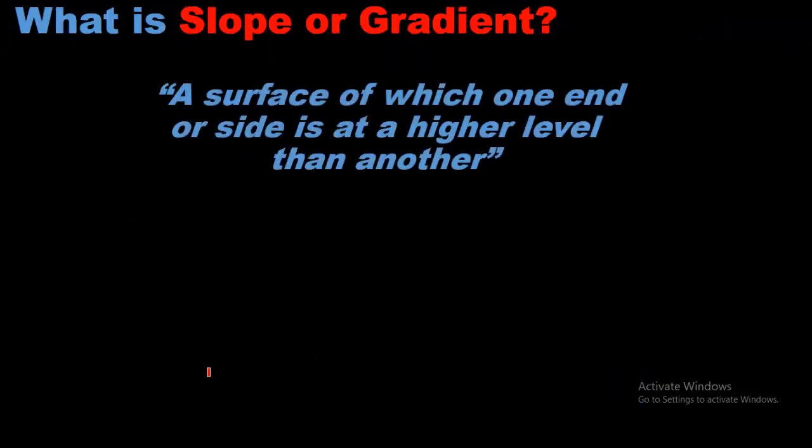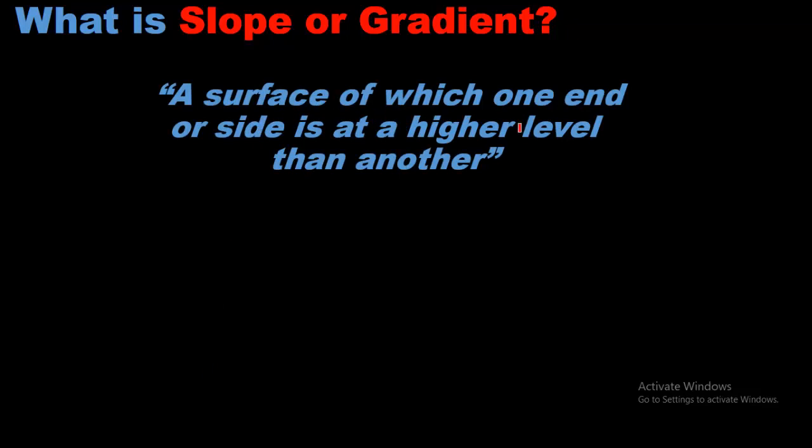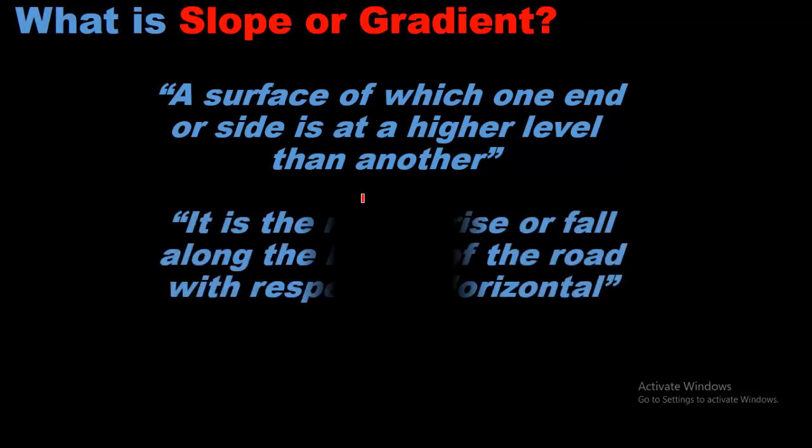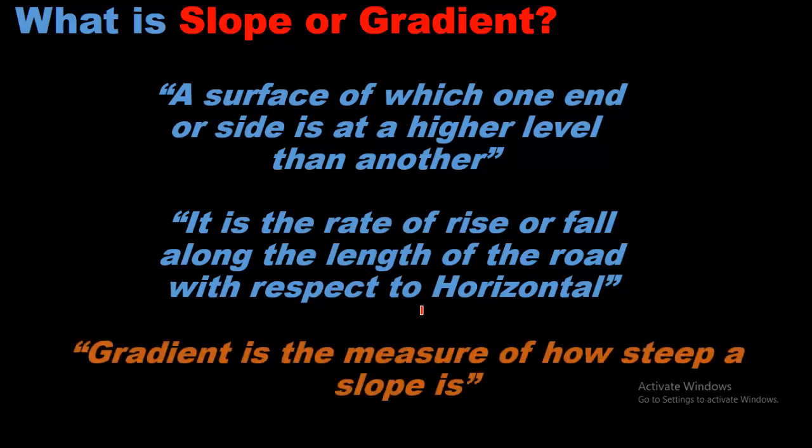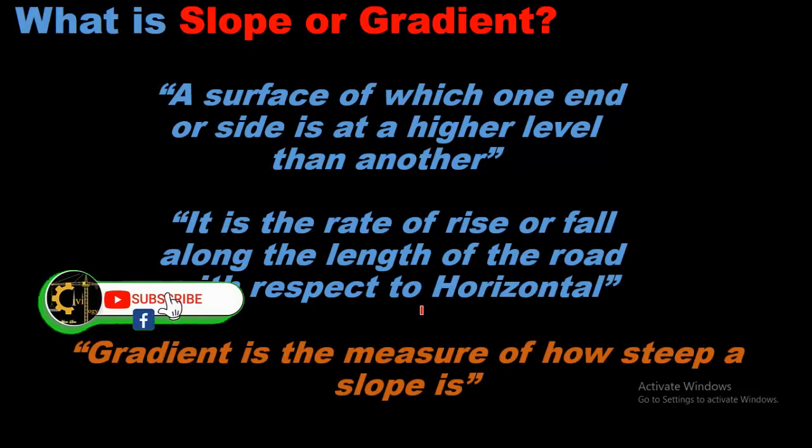First of all, one must understand what is slope or gradient. Slope is defined as a surface of which one end or side is at a higher level than another. Or it is the rate of rise or fall along the length of the road with respect to the horizontal. And gradient is the measure of how steep a slope is.